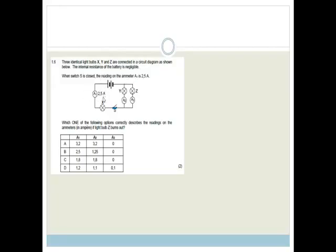Three identical light bulbs, X, Y, and Z, are connected in the circuit diagram as shown. The internal resistance of the battery is negligible. When switch S is closed, the reading on ammeter A1 is 2.5 amps. Which one of the following options correctly describes the readings on the ammeters if light bulb Z burns out? When this is working, the current in here is going to be 2.5 amps. Then this is going to split. The current in here is going to be 1.25, and the current here is going to be 1.25.